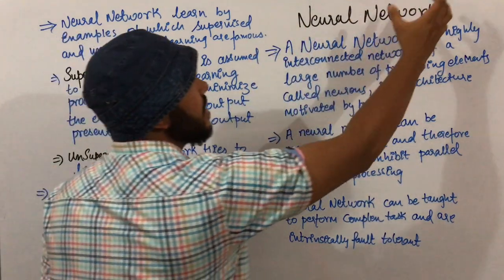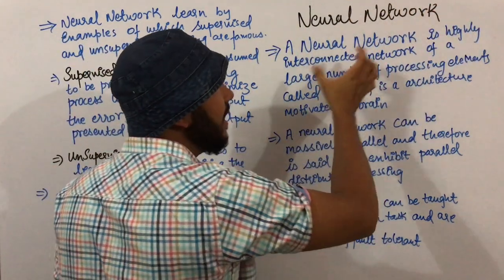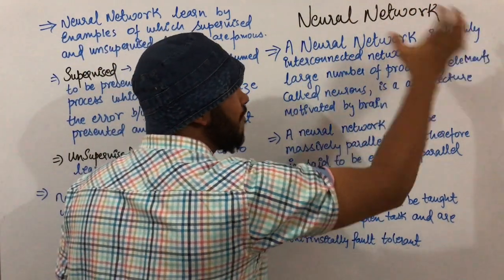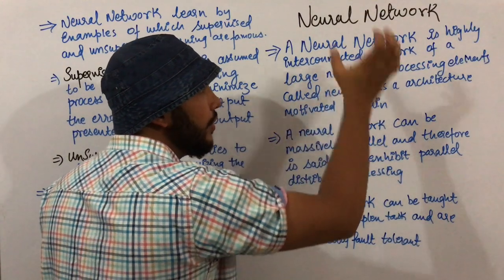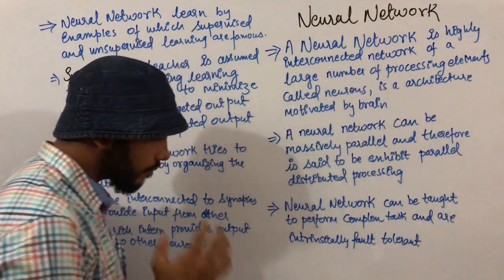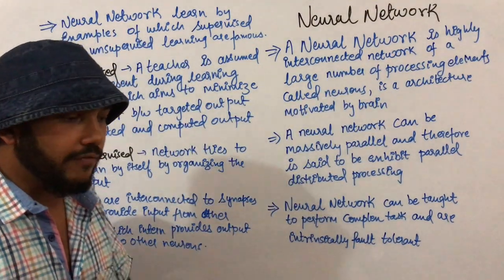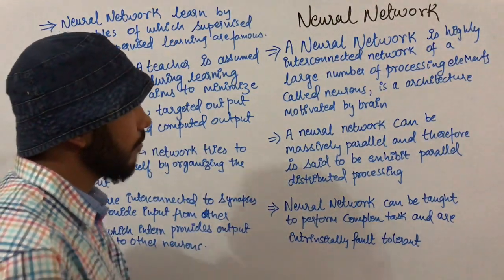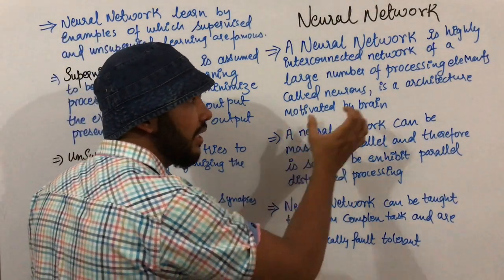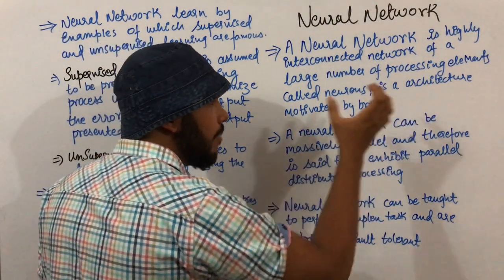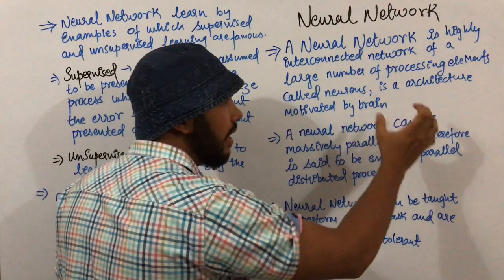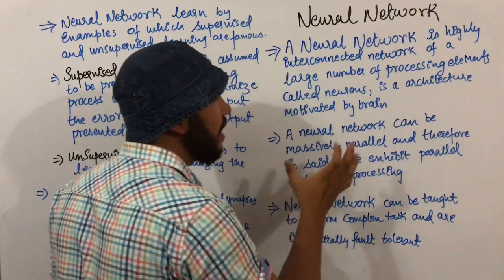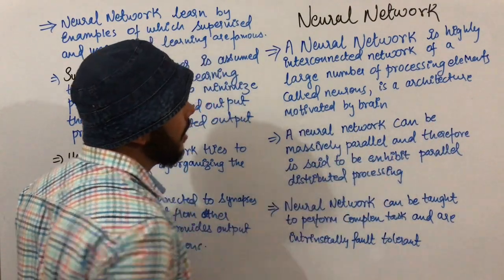A neural network is a highly interconnected network of a large number of processing elements called neurons. A neural network can be massively parallel, and therefore it is said to exhibit parallel distributed processing.